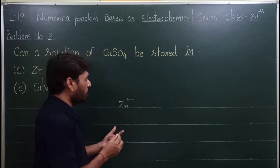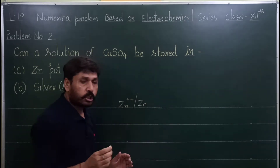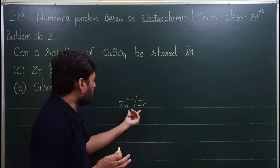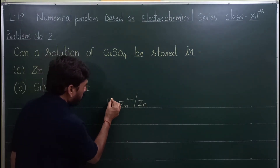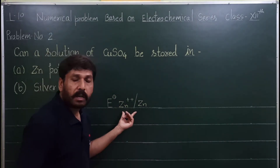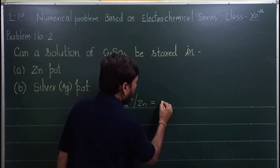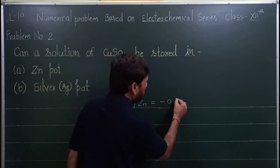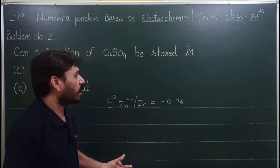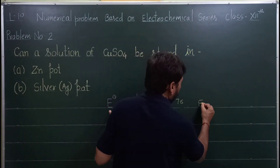Zn2+ / Zn — if you can see the standard reduction potential of zinc, E naught for Zn2+ / Zn, this is the standard reduction potential of zinc, which is minus 0.76 volts. This is the reduction potential of zinc.